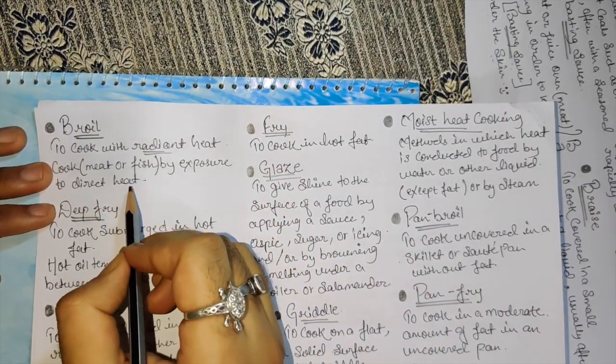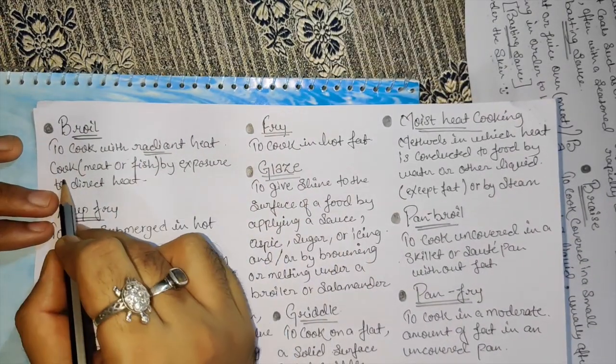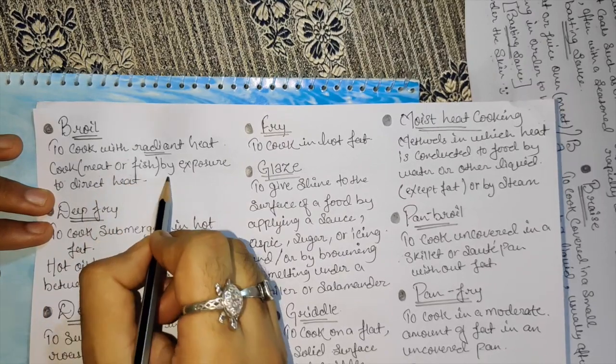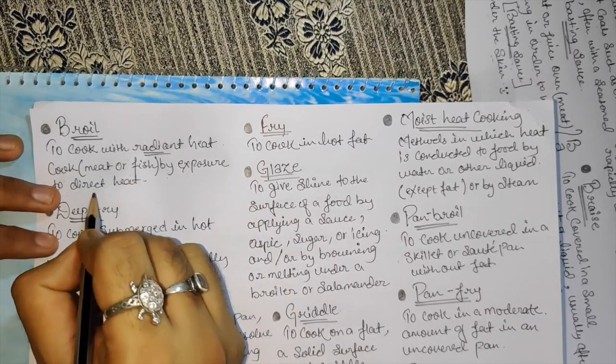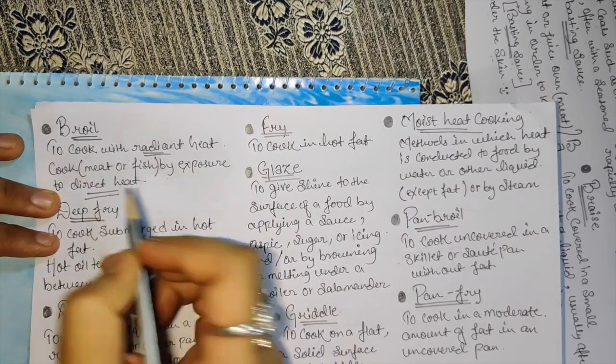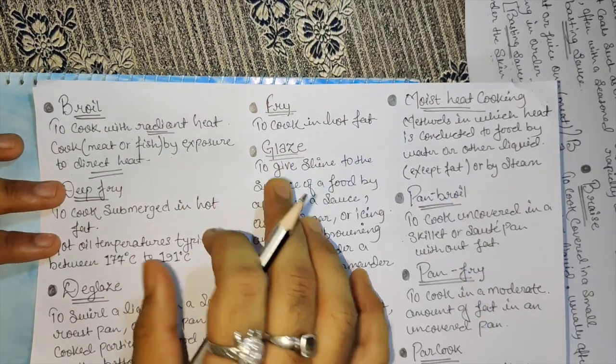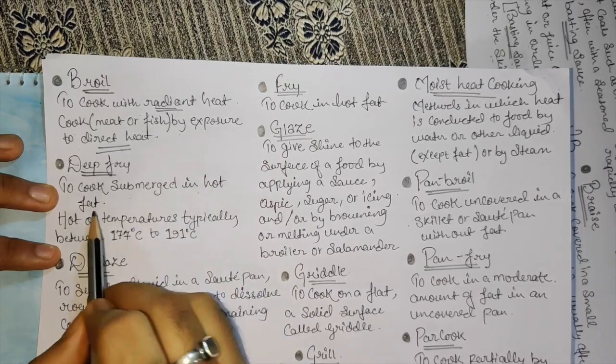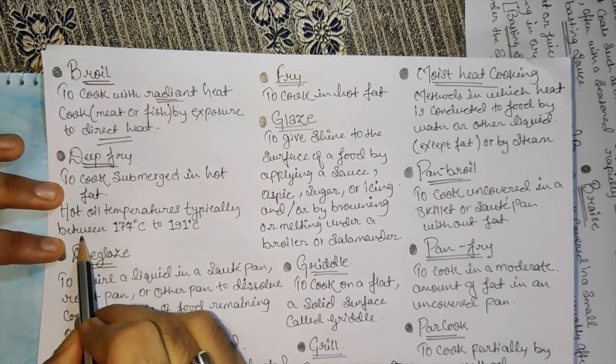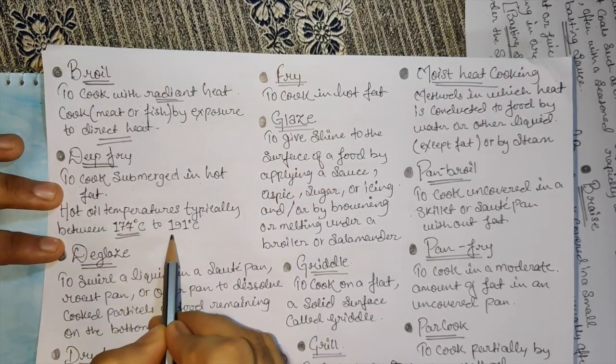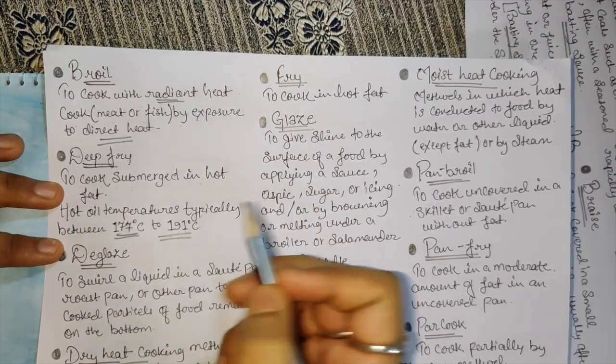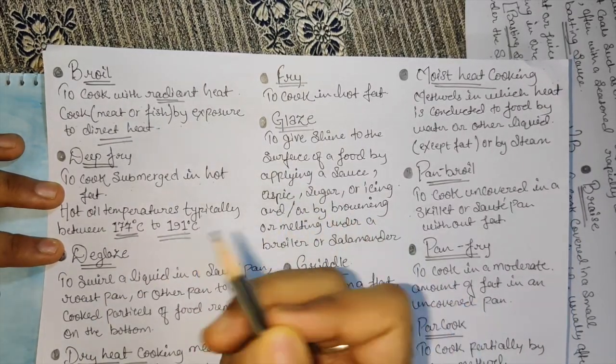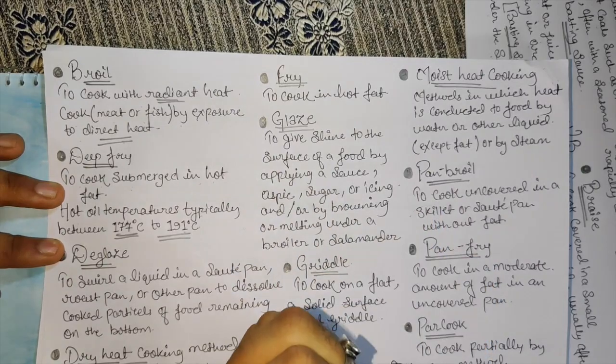Then we have broil - to cook with radiant heat. Cook meat or fish by exposing to direct heat. Deep fry - to cook submerged in hot fat. Hot oil temperature typically between 177 Celsius to 191 Celsius. It depends on the product.